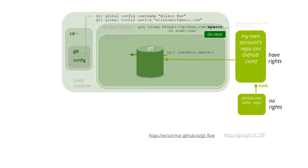Now we cd into the repository folder. The git branch command shows us all the branches held in the repository. Git defaults to the master branch, but many organizations protect that name for production use and instead create a development or dev branch for developers to work with.